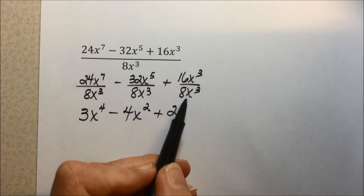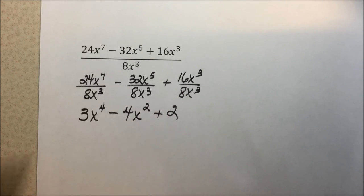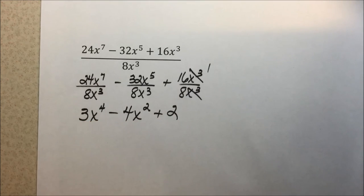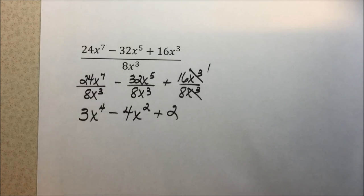16 divided by 8 is 2. We have common bases with the same power. Simplifying that, these will cancel out, leaving 1. Subtracting exponents would be x to the 3 minus 3 or 0 power, which is 1, and 1 times 2 leaves us with 2. The final answer is 3x to the fourth minus 4x to the second plus 2.